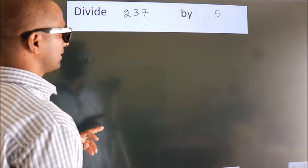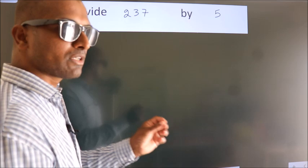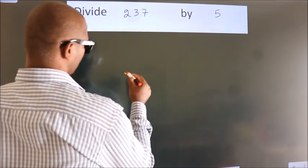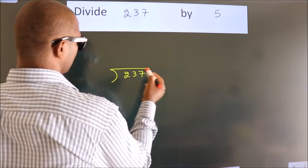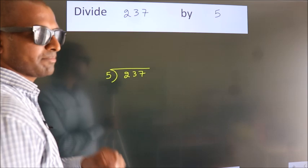Divide 237 by 5. To do this division, we should frame it in this way. 237 here, 5 here. This is your step 1.